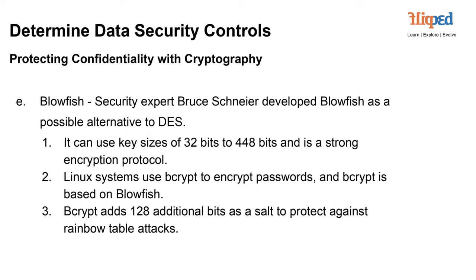Introducing Blowfish — a breath of fresh encryption air. Blowfish is an encryption protocol devised by renowned security expert Bruce Schneier, crafted as a potential successor to DES, offering an alternative path. Blowfish supports key sizes spanning from a mere 32 bits to a whopping 448 bits, providing a versatile range of encryption possibilities. Enter BCRYPT, a trusted guardian of Linux systems built on the sturdy foundation of Blowfish. To fortify defenses against rainbow table attacks, BCRYPT enhances security by adding an additional 128 bits of salt.